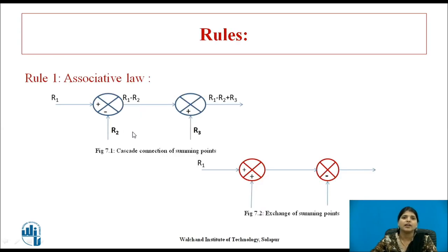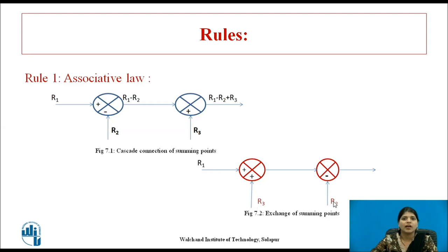Rule 1 is the associative law, which applies to cascade connection of summing points. Here R1 is given to the first summing point, and R2 and R3 are given respectively. With a minus sign on R2, we get R1 − R2, and then at the next summing point we get R1 − R2 + R3. If we exchange the positions of the summing points — placing R3 first and R2 second — we still get the same output: R1 + R3 − R2. This is the associative law.